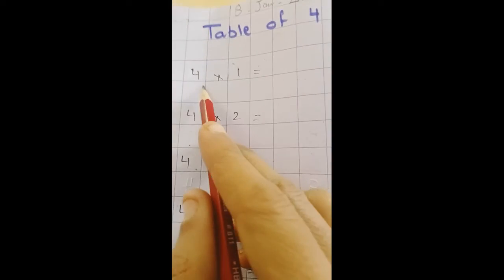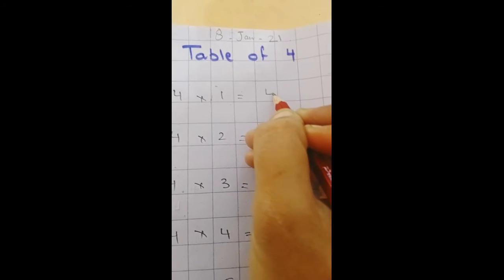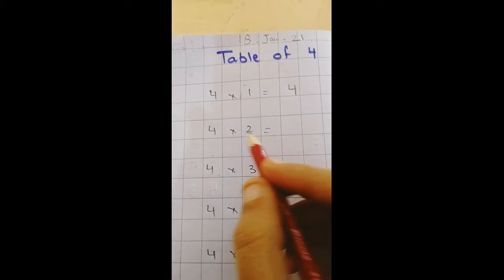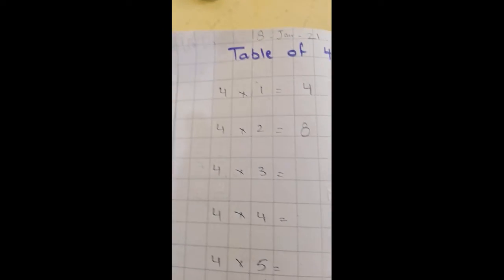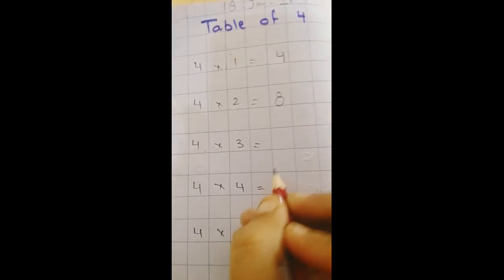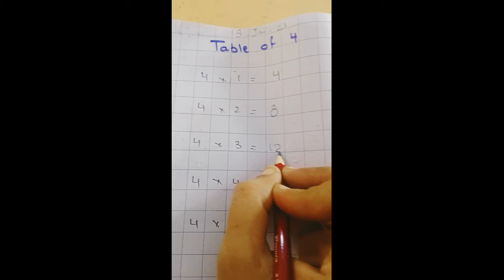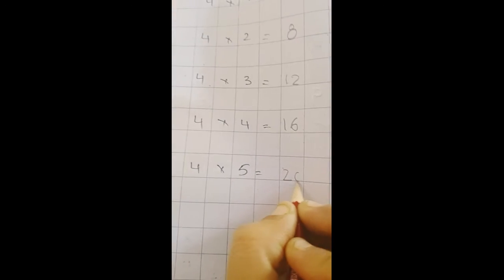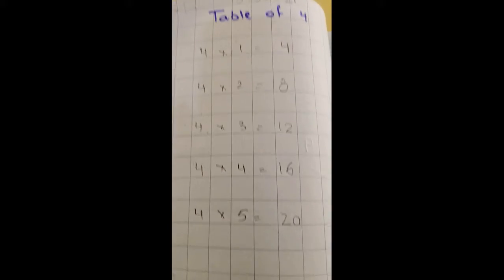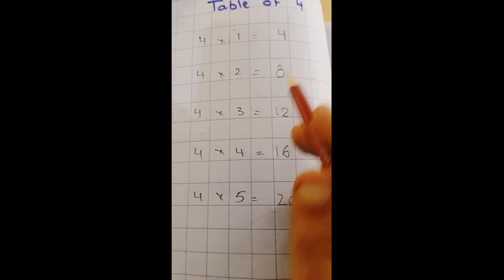4 1's are 4. 4 2's are 8. 4 3's are 12. 4 4's are 16. 4 5's are 20. Again read: 4 1's are 4.